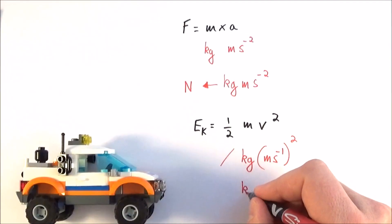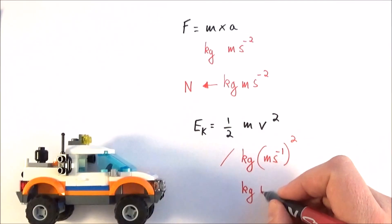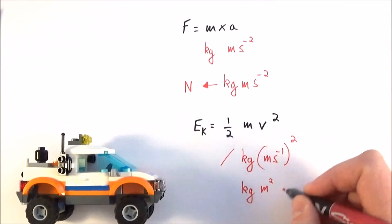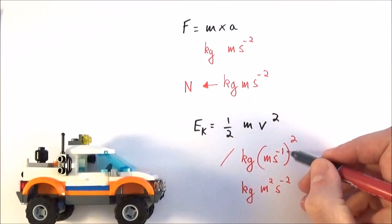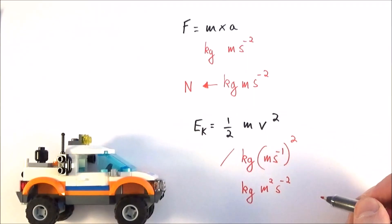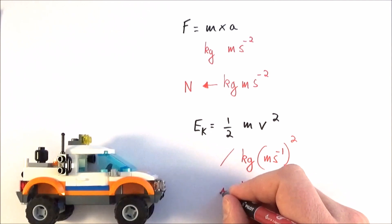So we can write this as kilograms, metres squared, second to the minus two, because we've got minus one raised to the power of two. And again, we don't talk about the energy of a body in terms of kilogram metres squared, seconds to the minus two. What we do is we talk about the energy in the unit of the joule.